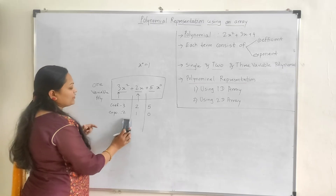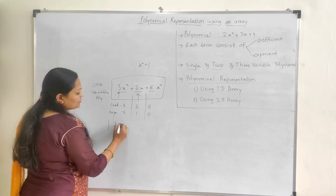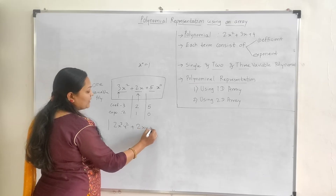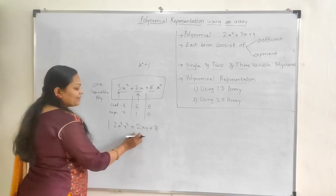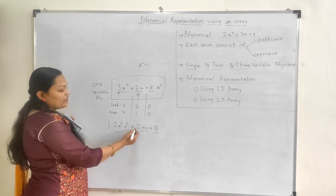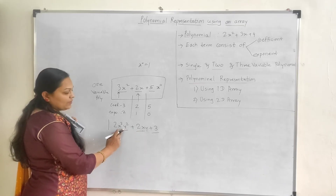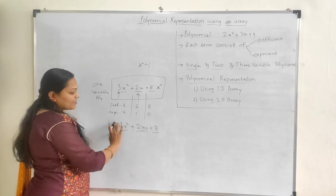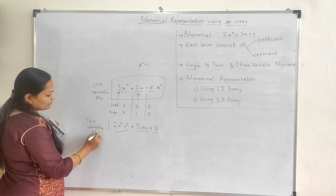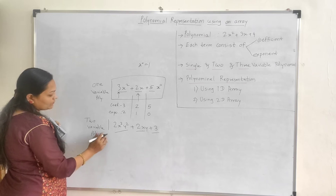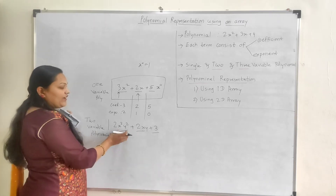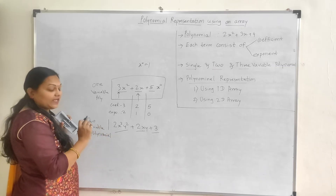Let's take one example of a two variable polynomial: 2x raised to 2, y raised to 2 plus 2xy plus 3. In this particular polynomial, three terms are there and each term has coefficients and exponents. Two variables are there — x and y — that's why this is called a two variable polynomial. If it includes three variables, then that we can say as a three variable polynomial.